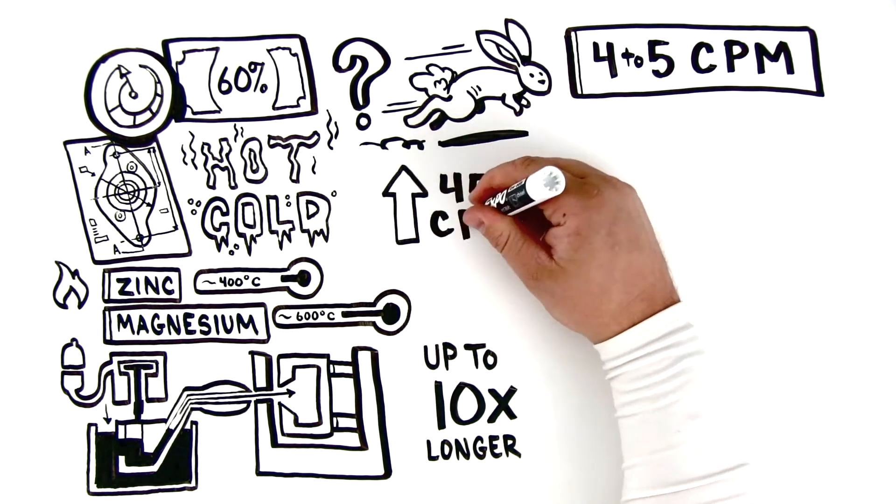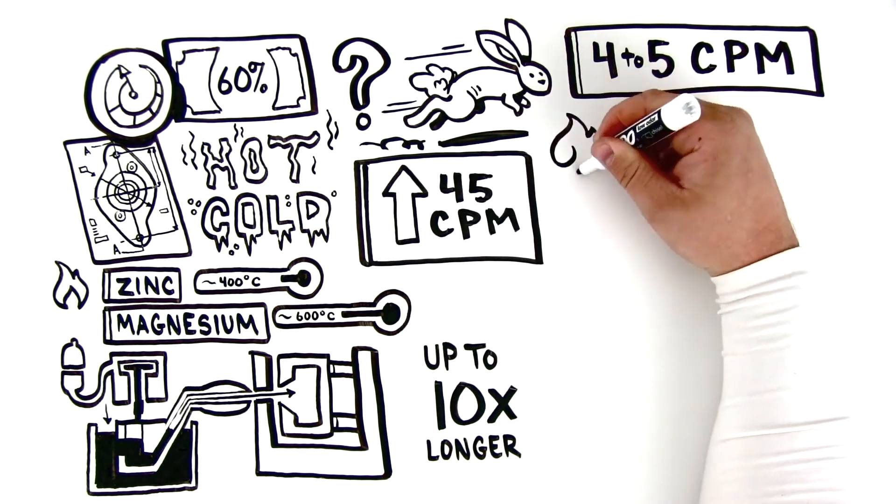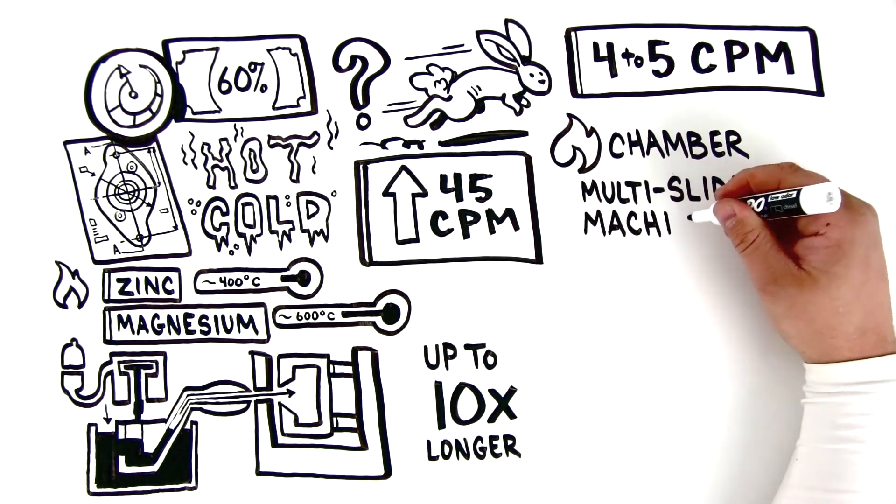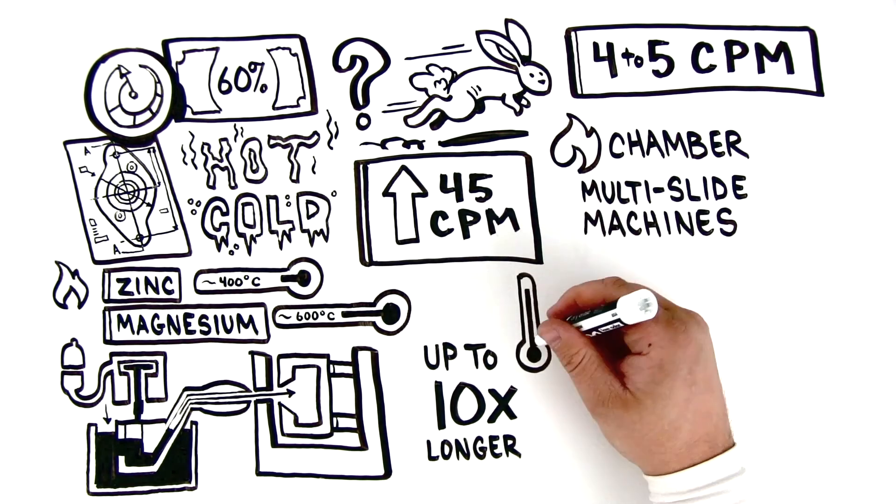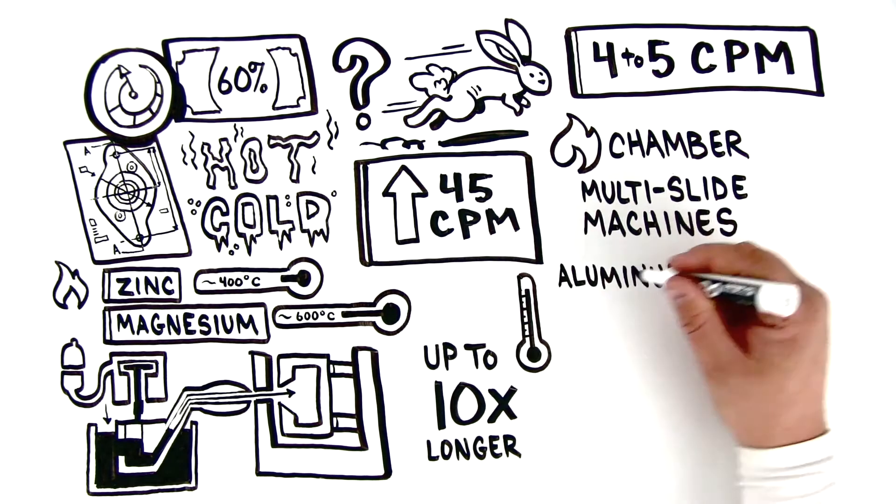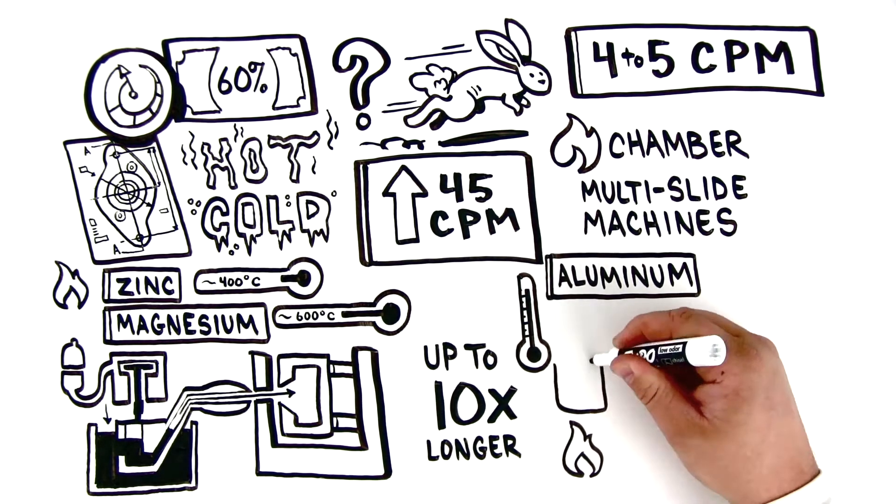And upwards of 45 cycles per minute from our proprietary hot chamber multi-slide machines. When working with aluminum-based alloys with high melting points and corrosive properties, cold chamber die casting is required.